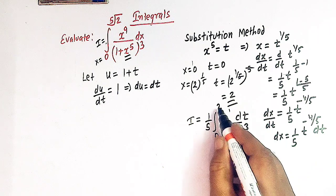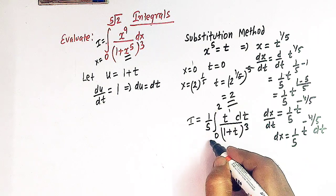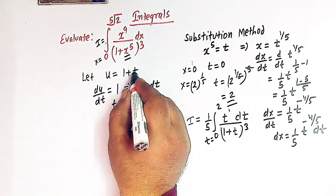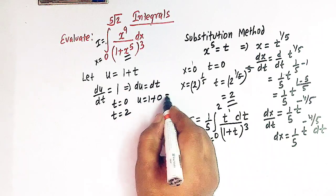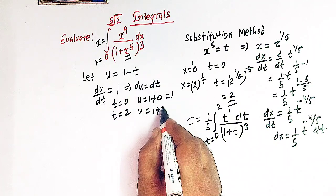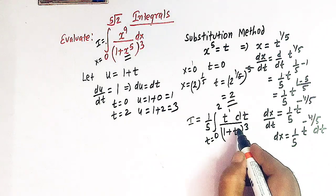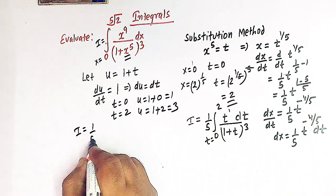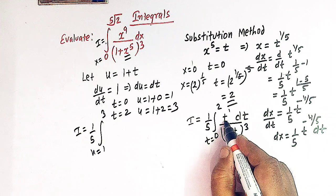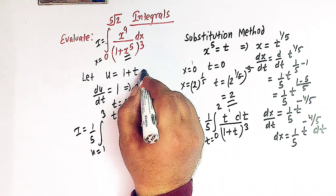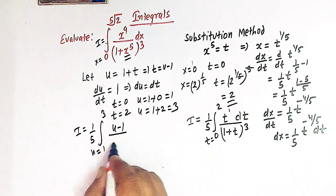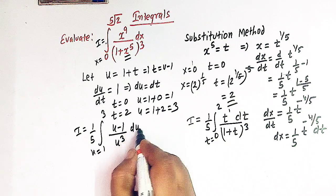The limits of integration can be changed accordingly. Here t goes from 0 to 2. When t is 0, u is 1 plus 0, that is 1. When t is 2, u is 1 plus 2, that is 3. So now this integral can be written as 1 over 5 times the integral from 1 to 3, and t can be written as u minus 1. So we have u minus 1 over u cubed du.